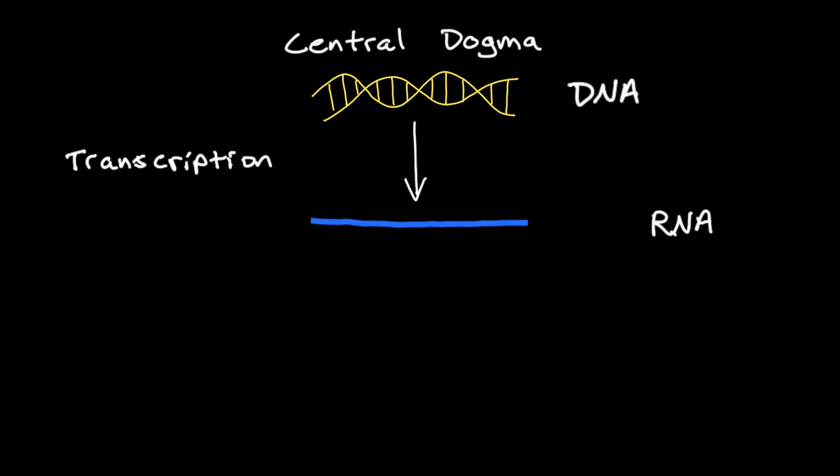Now some genes are what we call non-coding, and that means that their RNAs have some function on their own. So in that case, we're basically done at this step. You'll see some really interesting examples of non-coding RNAs in some future lectures.